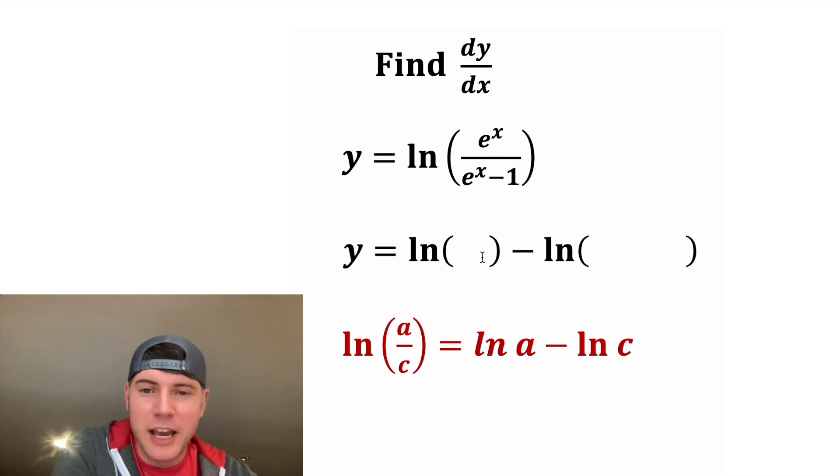So in this case, the top function is e to the x, and this bottom function is e to the x minus 1.